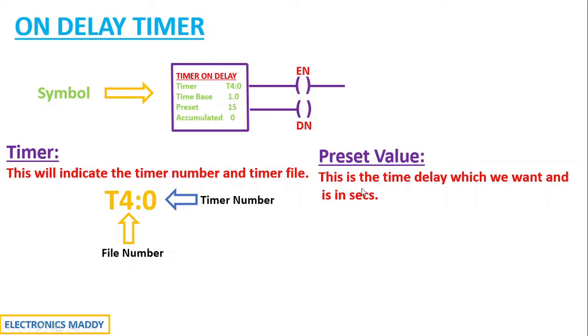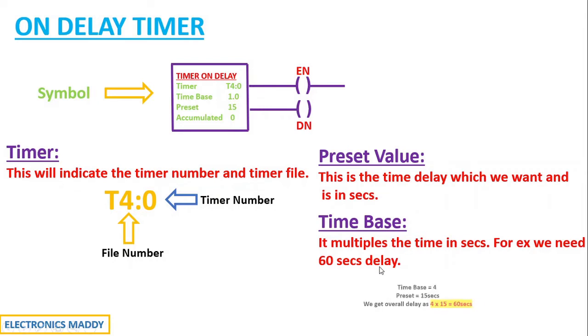Over the preset value is basically the actual time delay that we want and it is in seconds. For example, if we want a time delay of 15 seconds, we will be setting the preset value as 15. Then what is time base? Time base actually multiplies the time in seconds. For example, if we need 60 seconds delay and we have time base of 4 and preset value of 15 seconds, time base will actually multiply its value with the preset value in order to give the desired time seconds.